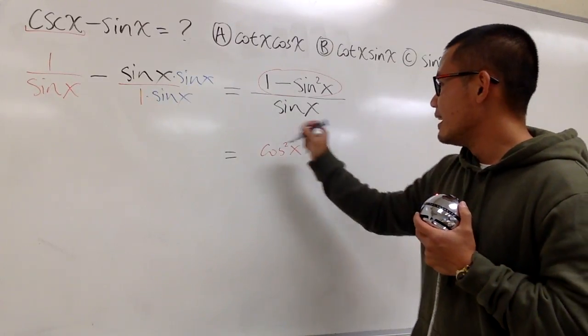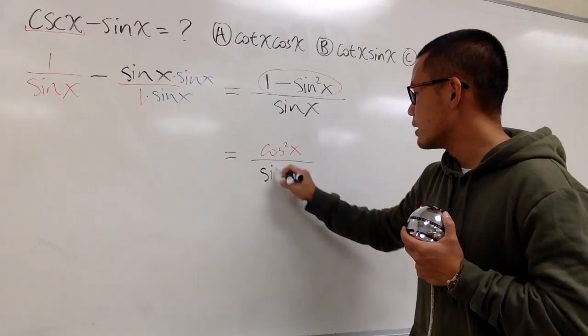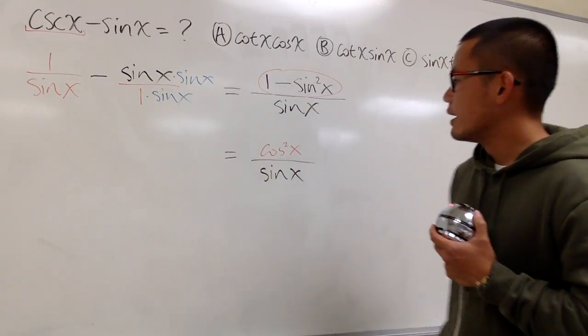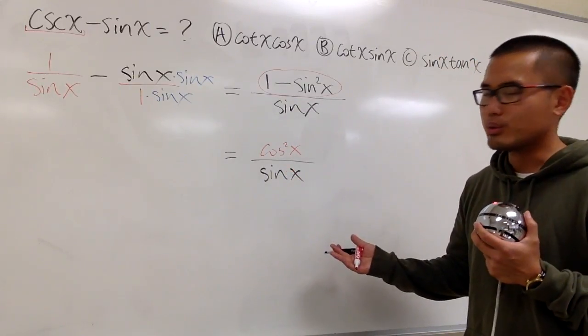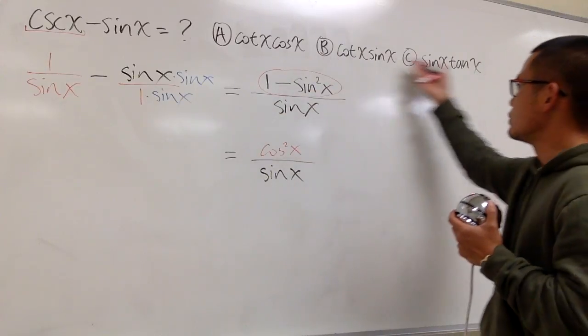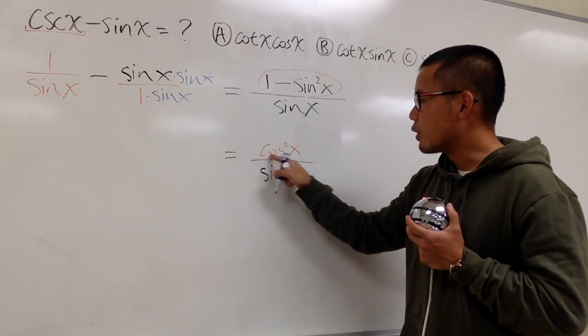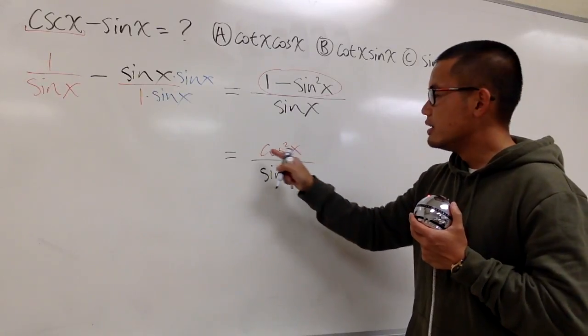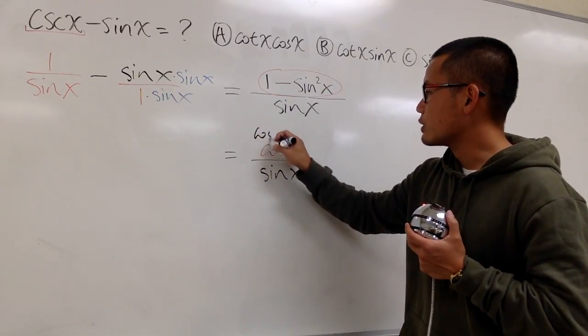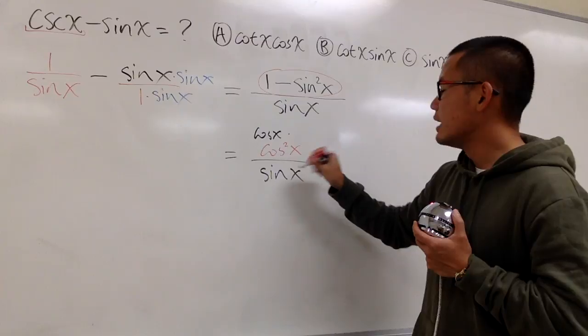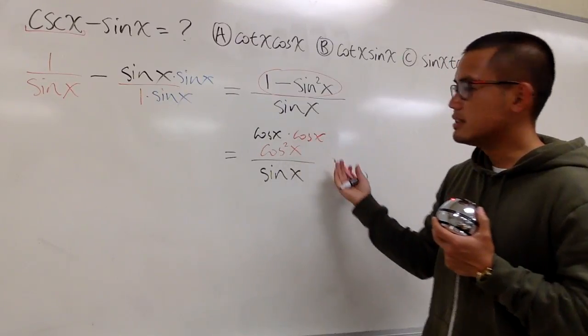Right? And then we still have this over sin x. And now what can we do to get this to become one of these right here? Well, we notice that this is cosine square x. This is the same as saying we have cosine x and then we multiply by another cosine x.